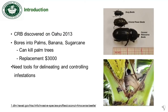CRB was discovered on Oahu in late 2013. It bores into palms, banana, and sugarcane. These borings make the palm more susceptible to diseases and can even kill the palm tree. Replacement of a palm is expensive, about $3,000. So we need tools for delineating and controlling the infestation.